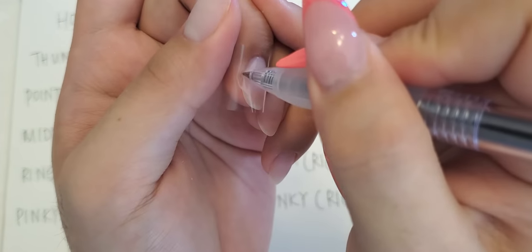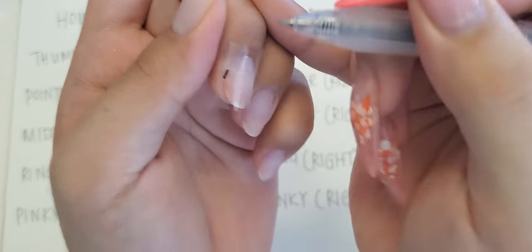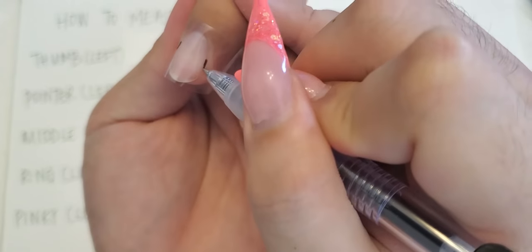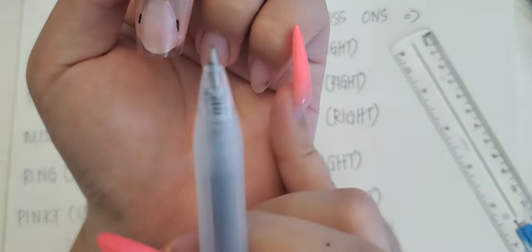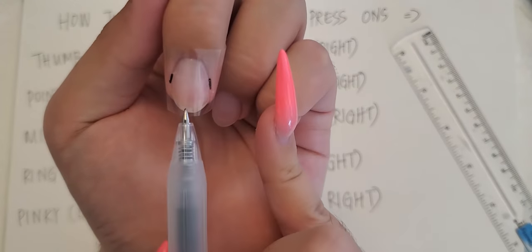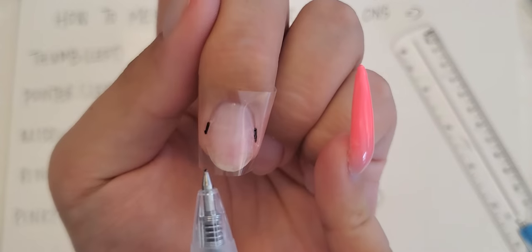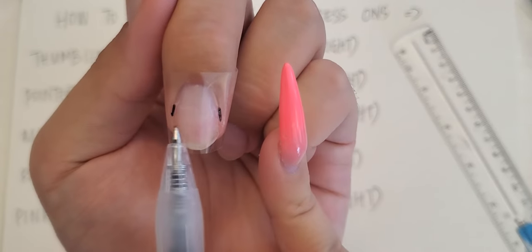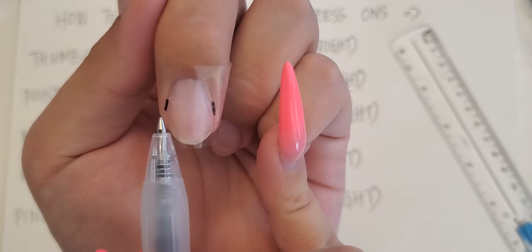So you're gonna take your pen, you're gonna make a mark at the very side of your nail and do the same for the other side. You want to do this at the widest part of your nail. So as you can see, for example like this finger, this is the widest part of my nail. So you want to take that measurement.